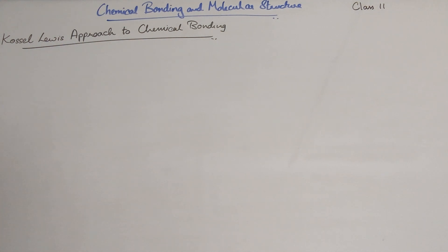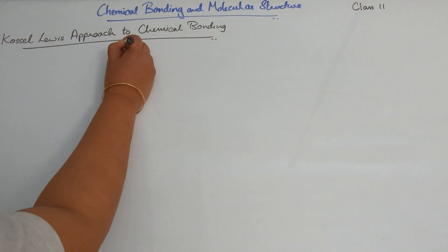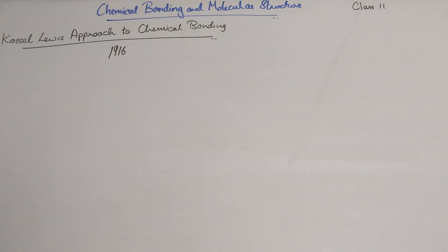This approach was given by two scientists: Walter Ludwig Julius Kossel, a German physicist, and Gilbert Newton Lewis, an American physical chemist. Both worked independently and were the first to come up with this approach, which came out in the year 1916. Both concluded that chemical bonding is related to valence electrons.